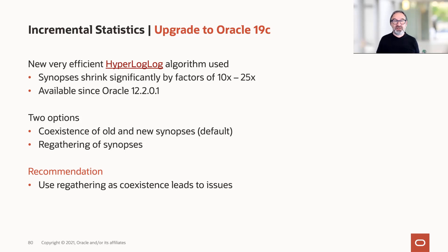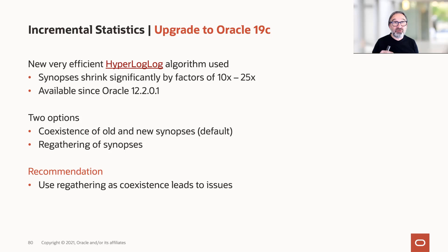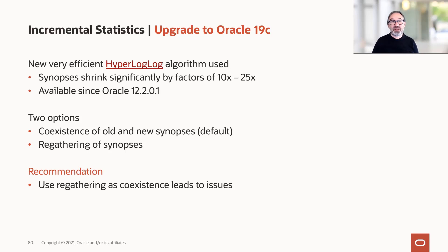HyperLogLog is not an invention from Oracle — it's a known algorithm. If you download the slides as PDF, the link will get you to a Wikipedia entry explaining the algorithm. With that algorithm, the synopsis shrinks significantly. From tests done, we estimate a factor of 10 to 25. So if you had a terabyte synopsis before, you may now have just 100 gigabytes — or even less.